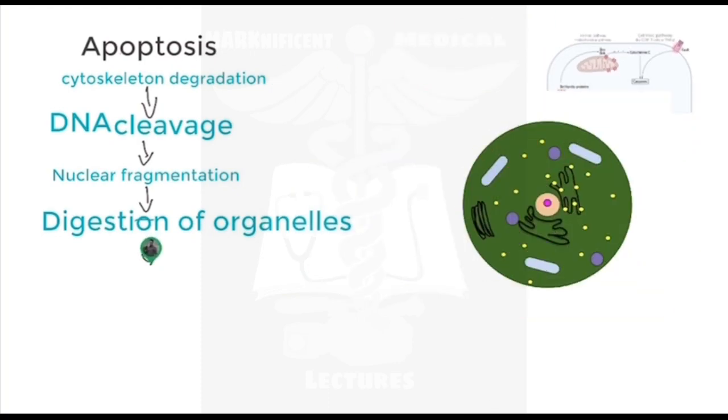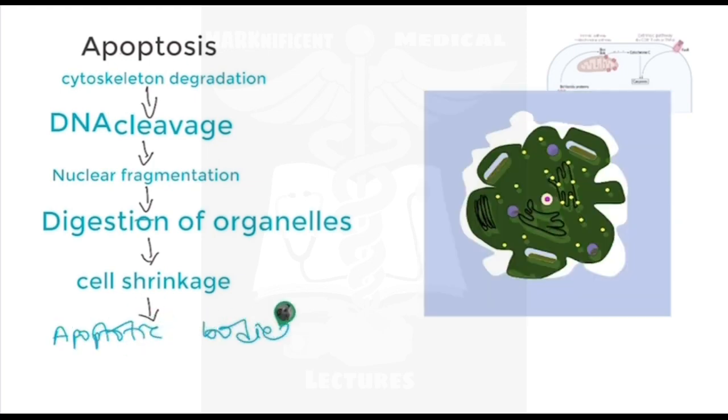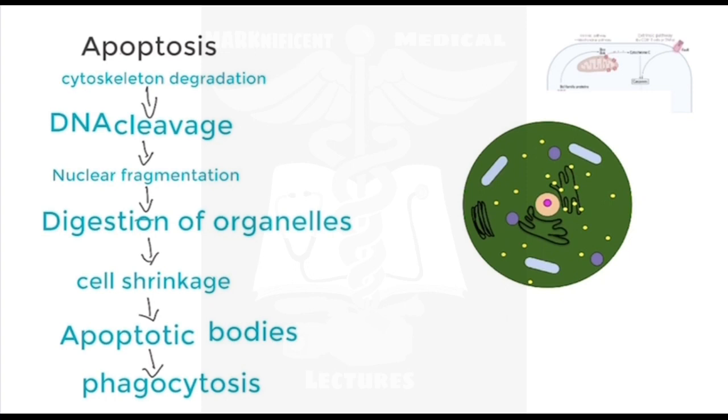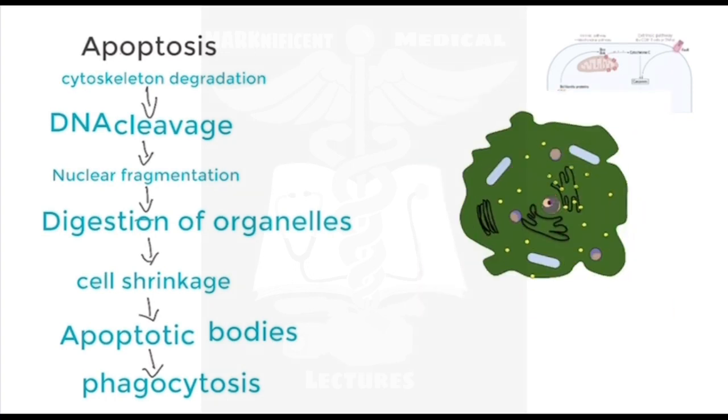The cell starts to shrink and separates into smaller fragments termed apoptotic bodies. Apoptotic bodies are phagocytosed by macrophages and further degraded. The cell membrane remains intact during apoptosis and there is no leakage of cell content. Therefore, unlike necrosis, apoptosis does not elicit inflammation.